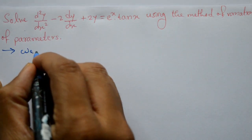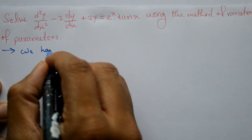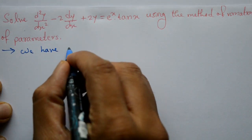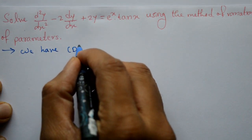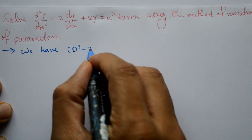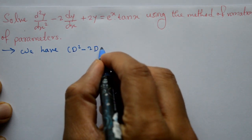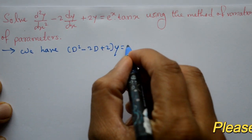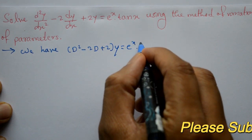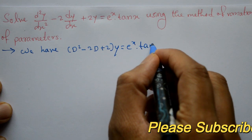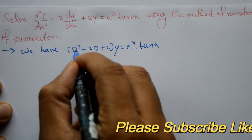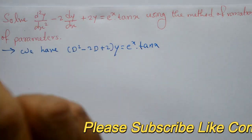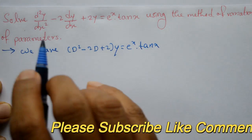We have the equation written in operator form as (D² minus 2D plus 2)y equals e^x times tan x, where D stands for dy/dx.